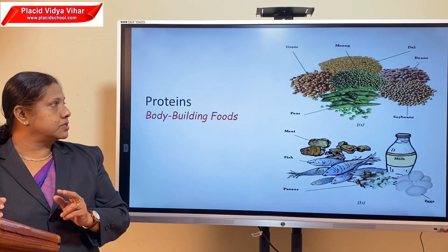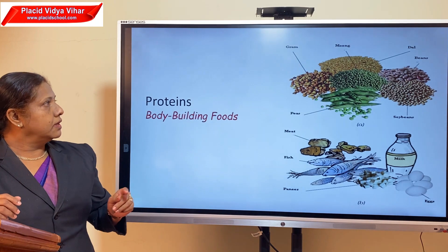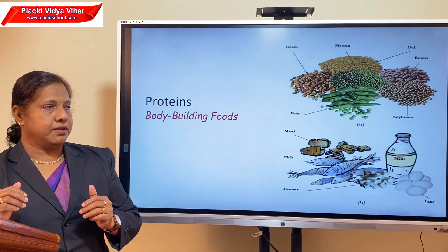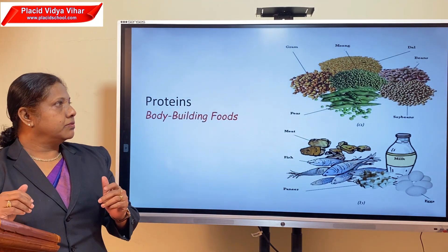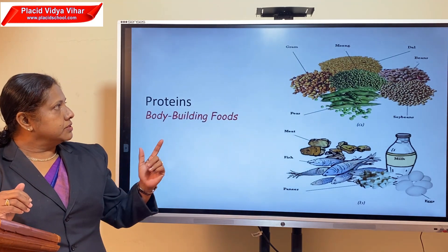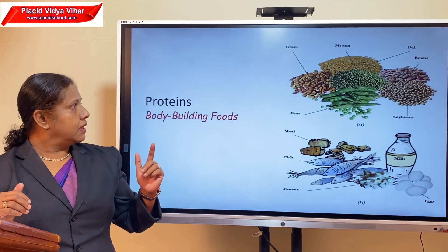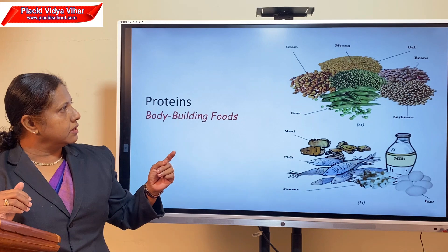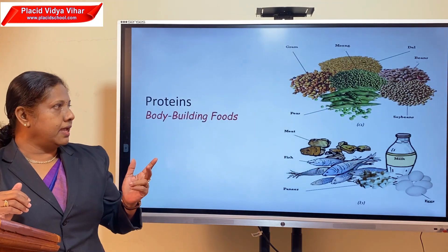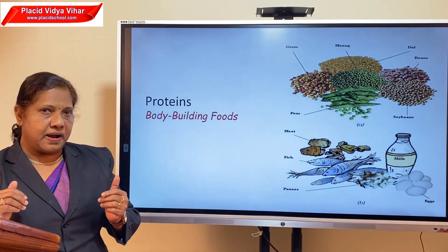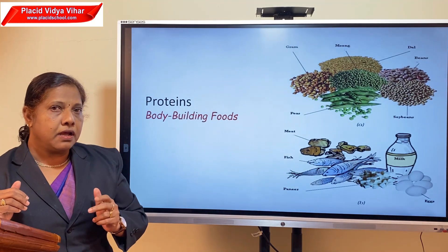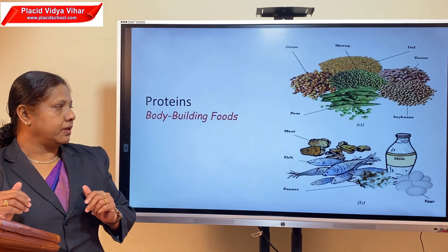Let us see the sources of proteins. We get proteins from plants and animals. Plant sources of proteins include peas, gram, moong, dal, beans, and soybean — these are called pulses. All these pulses are rich sources of protein.